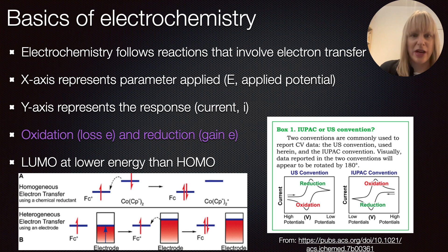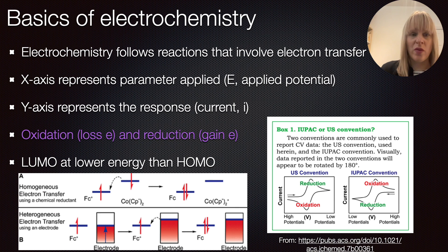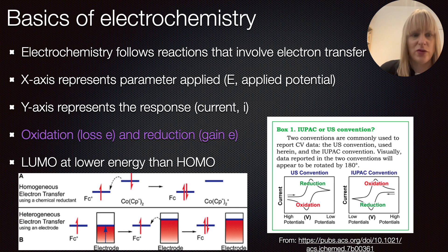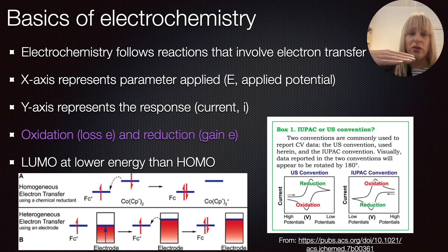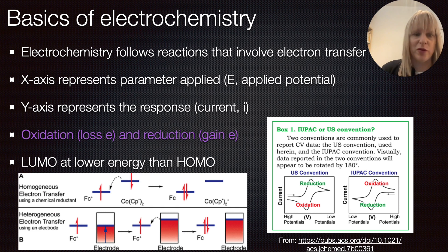Why do you actually have this electron transfer? We can look at two different versions. We have a homogeneous electron transfer where you involve a chemical reactant, and here you can see we look at the lowest occupied molecular orbital (LUMO) and the highest occupied molecular orbital (HOMO). If overall your LUMO is at lower energy than the HOMO, you will see that these electrons can transfer. In scenario B, they are at the same level, but when you use a potentiostat the other one is bumped up, giving you the same principle where the HOMO is at higher energy than the LUMO, so you get that electron transfer again.